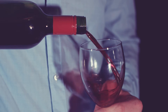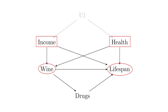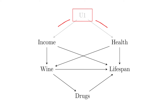Let's take a quick example. Say we're interested in the effect of drinking wine on your lifespan. Here's a simple diagram — leaving some stuff out, just for demonstration. We have factors like income and health that affect both how much wine you drink and your lifespan. Health here represents your background level of health before you started drinking any wine. We also have wine affecting drugs, which affects lifespan — maybe wine is a substitute or complement to taking other drugs, affecting lifespan. We also have U1, an unobserved variable that relates to income and health.